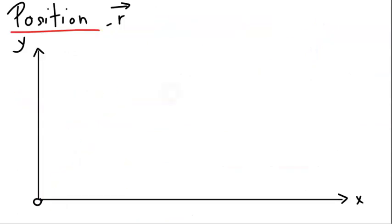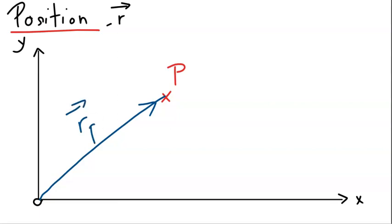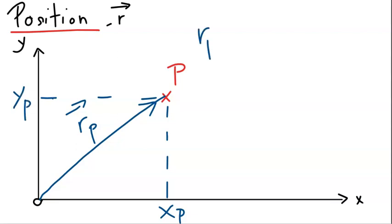The position of a point, say point P, is defined by a position vector — a vector that extends from the origin to where the point is. We shall denote this vector R with a subscript P. This point has two coordinates: the x-coordinate, xp, and the y-coordinate, yp. So the vector R_P that identifies the position of point P is written as xp i-hat plus yp j-hat.